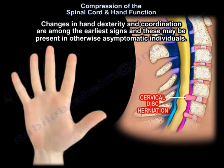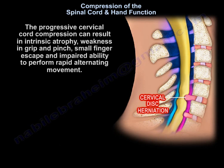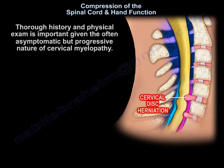Changes in hand dexterity and coordination are among the earliest signs, and these may be present in otherwise asymptomatic individuals. The progressive cervical cord compression can result in intrinsic atrophy, weakness in grip and pinch, small finger escape, and impaired ability to perform rapid alternating movement.